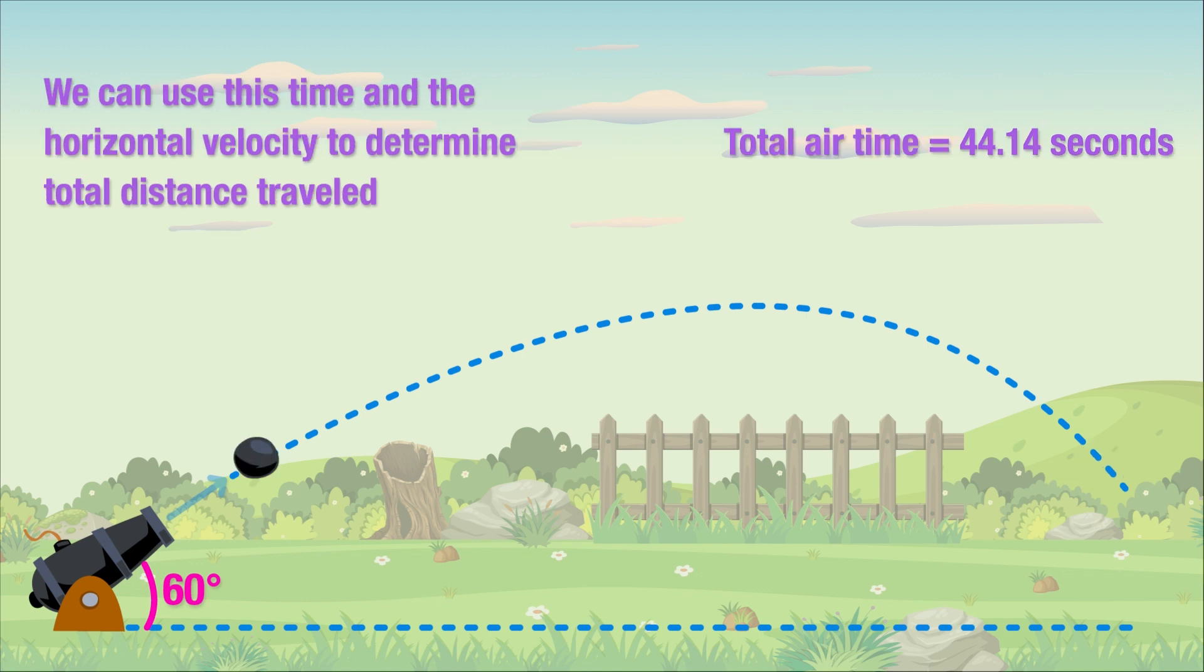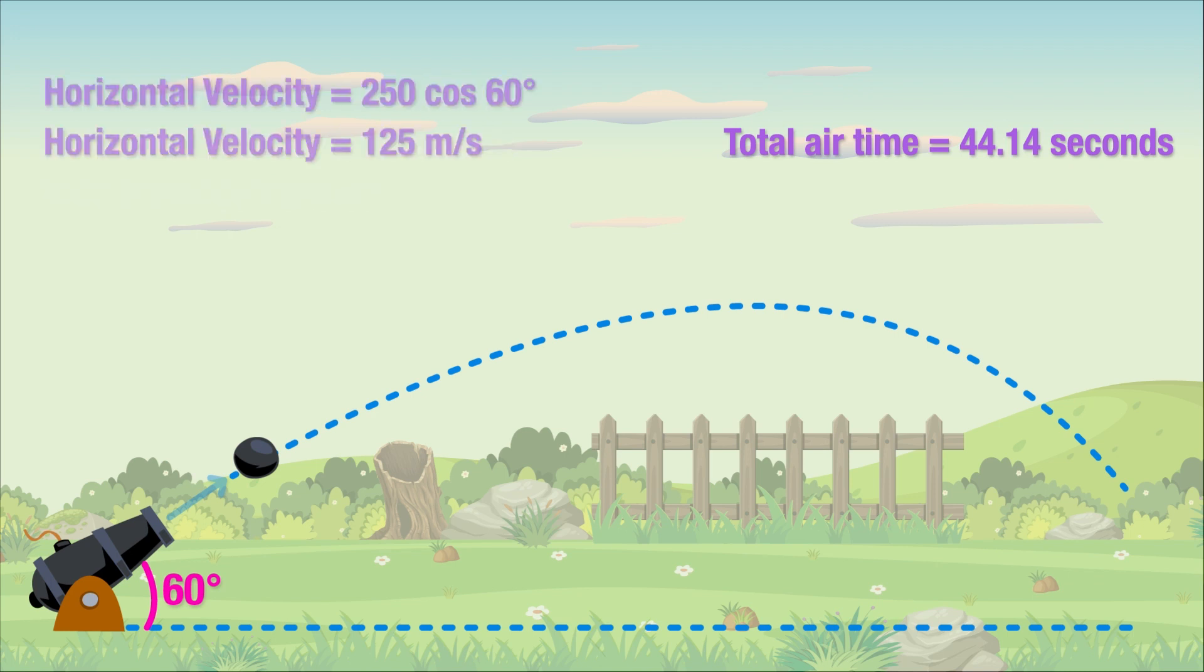Now we know that the projectile will be in the air for around 44 seconds, and that will be the same amount of time it spends traveling forward or horizontally. What this means is, all we have to do is determine the horizontal velocity of the projectile, and then we can use that to calculate the distance it travels.